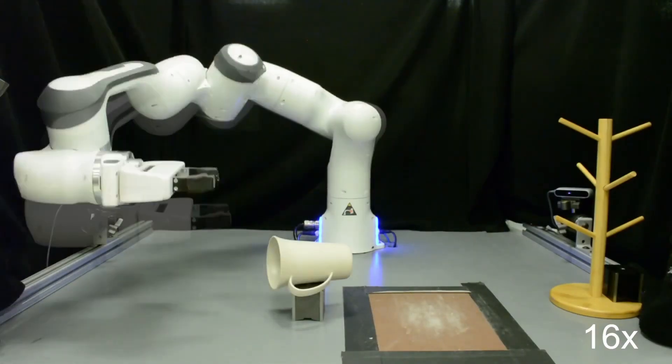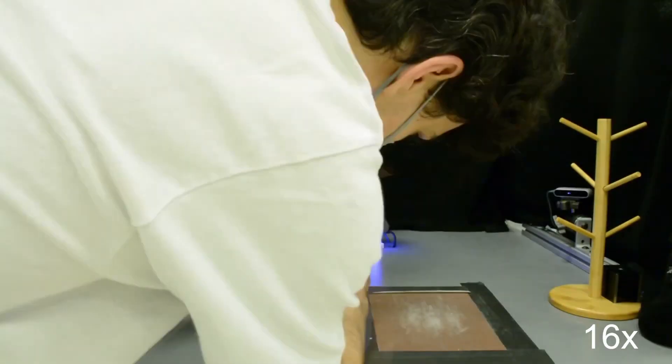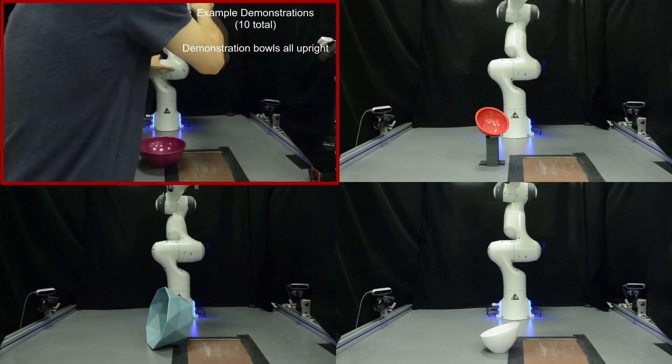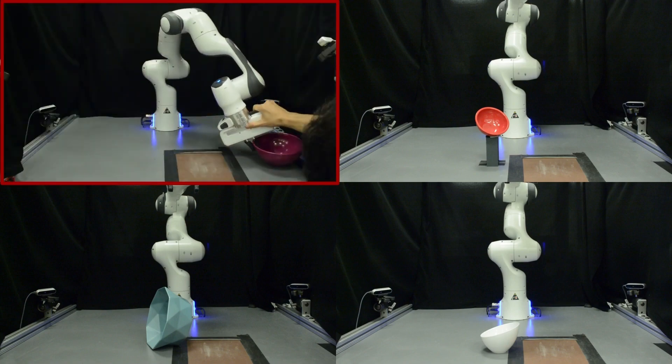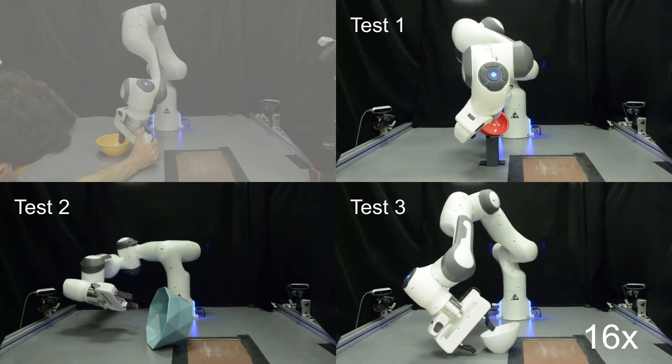Here we see more examples of the robot executing the task on mugs placed in out-of-distribution poses. We also demonstrate our approach on other categories. Here the task is to grasp a bowl and place it upright on the side of the table. Again, note that the test bowls are placed in random initial configurations that were unseen in the demos.